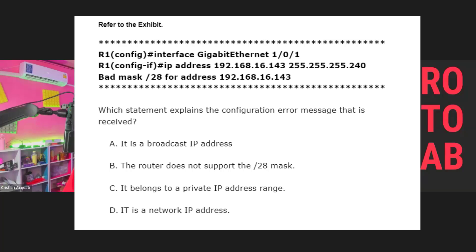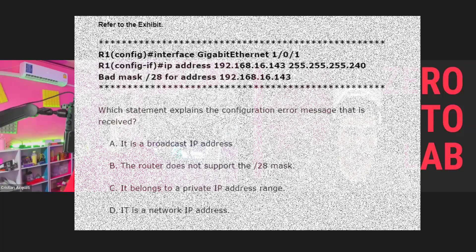Option D: it is a network IP address. Of course it's a network IP address — we are talking about networking. But options A and B could also be considered network IP addresses in the sense of network ID. If they are saying it is a network ID or broadcast ID, you might have to check the subnetting. But 'network IP address' on its own is not the issue. So the issue remaining is option A — it is a broadcast IP address. You can get to the right answer by just eliminating the wrong answers.